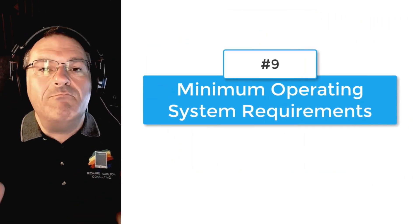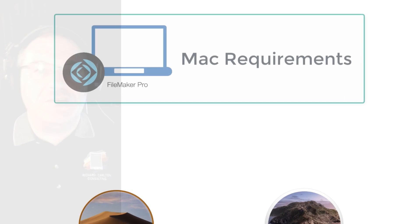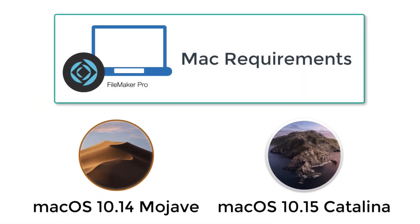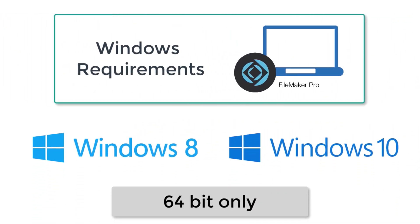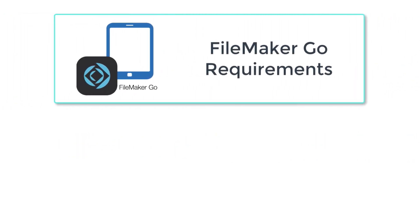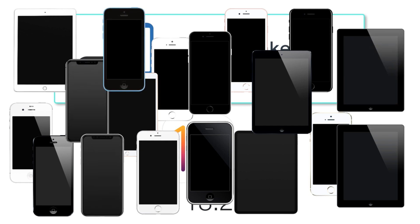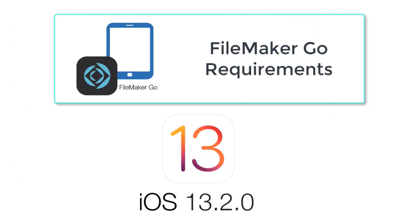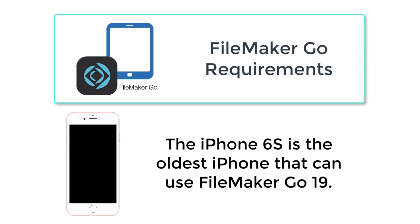Number nine on our list covers the minimum operating systems needed for the FileMaker 19 platform. On Mac, you'll need macOS 10.14 Mojave or 10.15 Catalina. On Windows, there's a change: the minimum is now Windows 8.1 — Windows 7 is no longer supported — so you have Windows 8.1 or Windows 10. For FileMaker Go, you need at least iOS 13.2. Apple has a lot of iOS devices, so check to make sure yours supports iOS 13.2. From personal experience, you'll need at least an iPhone 6S or better on the phone side.